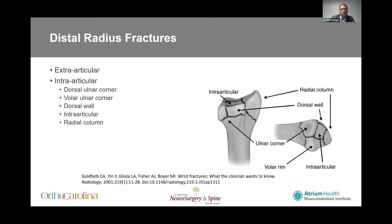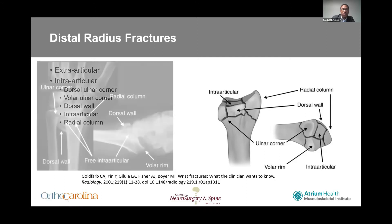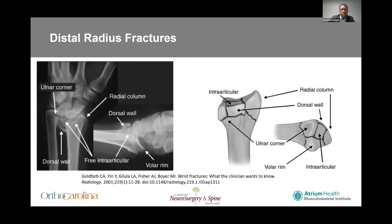When it comes to distal radius fractures, there are multiple types. Extraarticular is pretty self-explanatory. Intraarticular fractures typically have five different fragments that have been described: your dorsal ulnar corner, your volar ulnar corner, your dorsal wall, an intraarticular fragment for your die punch, then your radial column including the styloid and your scaphoid facet. If you're really discerning, you can actually make out all these different fragments on your plain films.